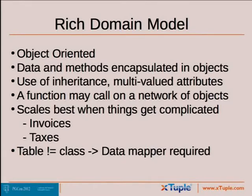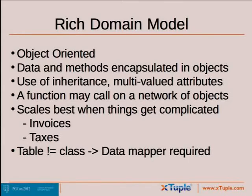So we picked up on the rich domain model — a fully object-oriented approach. From the client's perspective, you've got data and functions encapsulated in objects. It takes advantage of inheritance and you can have multi-valued attributes, so any given data field might include required fields and other behaviors. You make a call on a function and it may call on a whole network of objects to get an answer — it's not just a simple procedural function. The idea is it scales well when things get complicated, and when I say complicated I'm thinking of an invoice: a header, line items, pricing, customer records, and taxes, which are just terribly complicated.